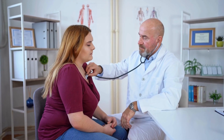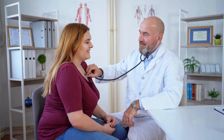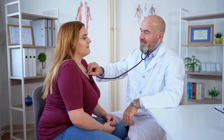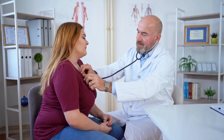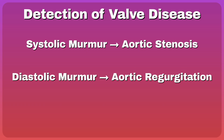When the aortic valve starts to become stiff or leaky, one of the many physical exam findings you might encounter is a murmur. The absence of a murmur does not rule out valve disease, but its presence does increase the likelihood of a valve problem. For the aortic valve specifically, if you hear a murmur during systole, you are likely hearing aortic stenosis; if during diastole, you are likely dealing with aortic regurgitation. A diastolic murmur is always considered abnormal, so if you appreciate one, notify the physician so they can investigate further.